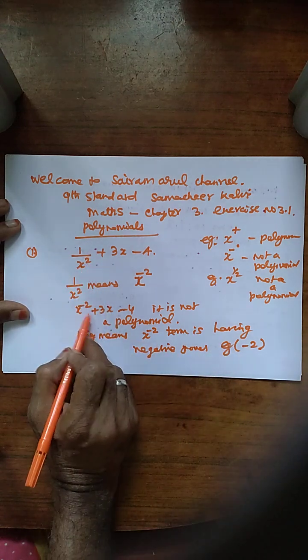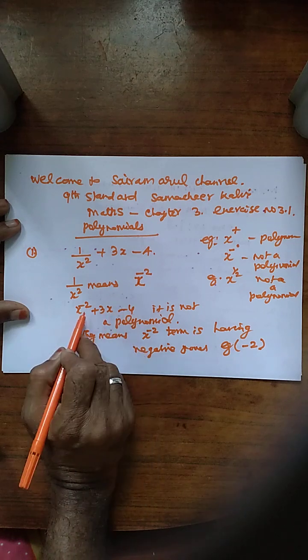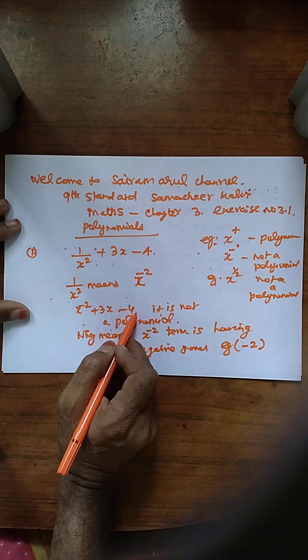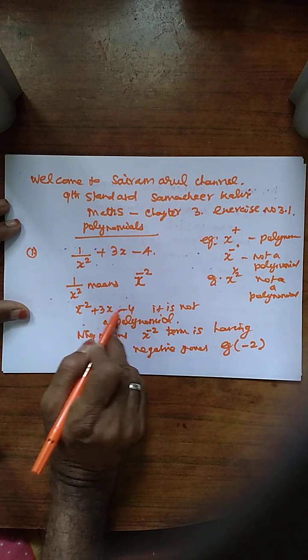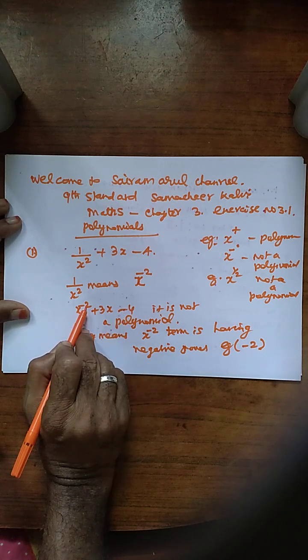In this polynomial, in this equation, in this algebraic expression that is x power minus 2 plus 3x minus 4, x is having the minus 2 negative power. So it is not a polynomial.